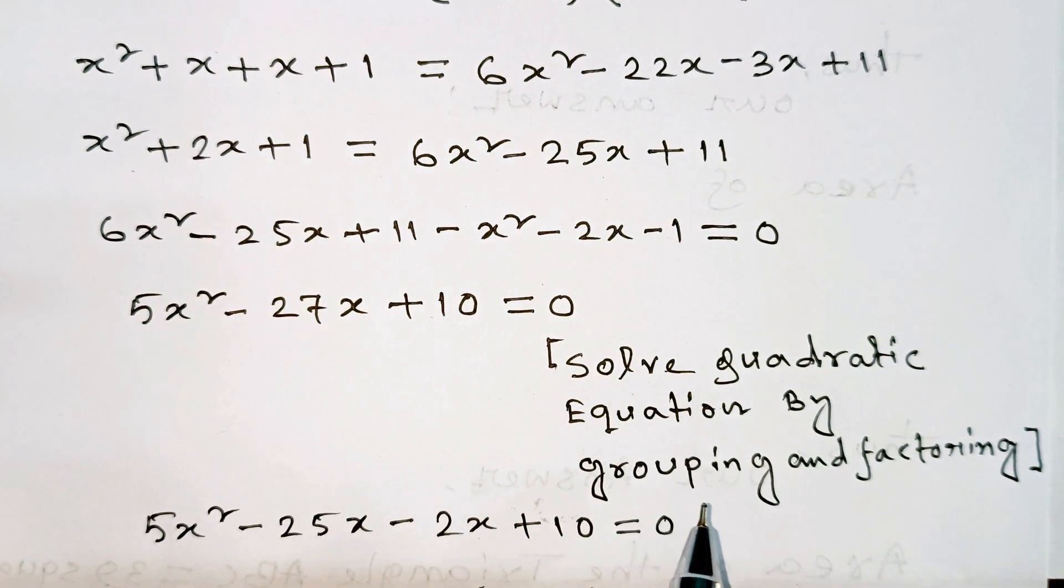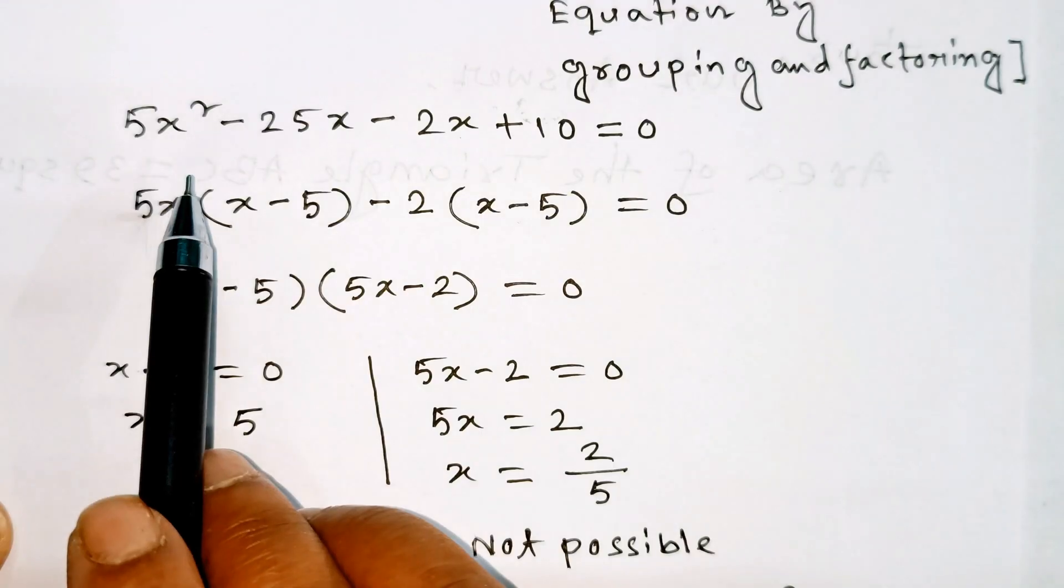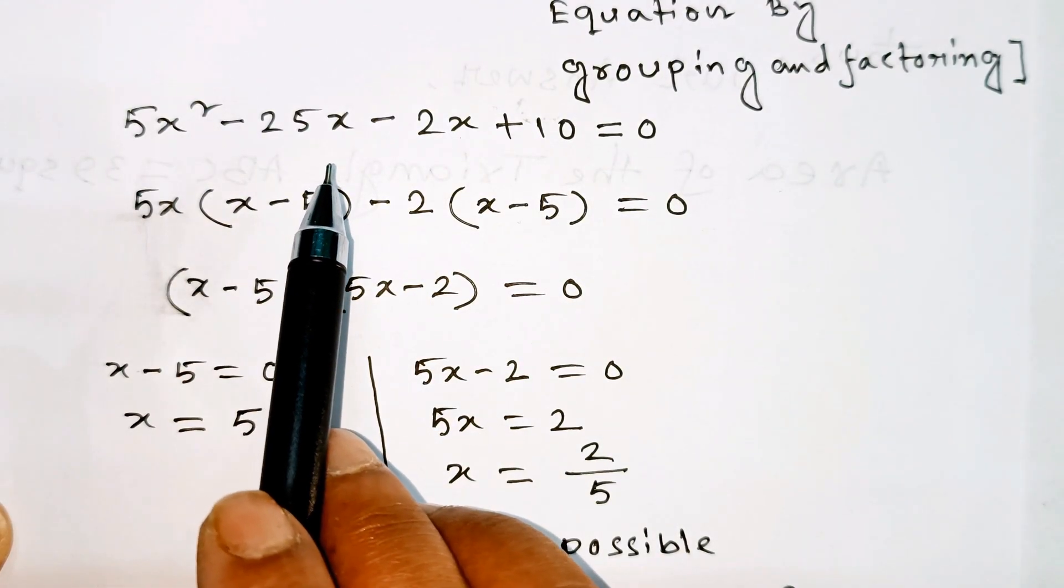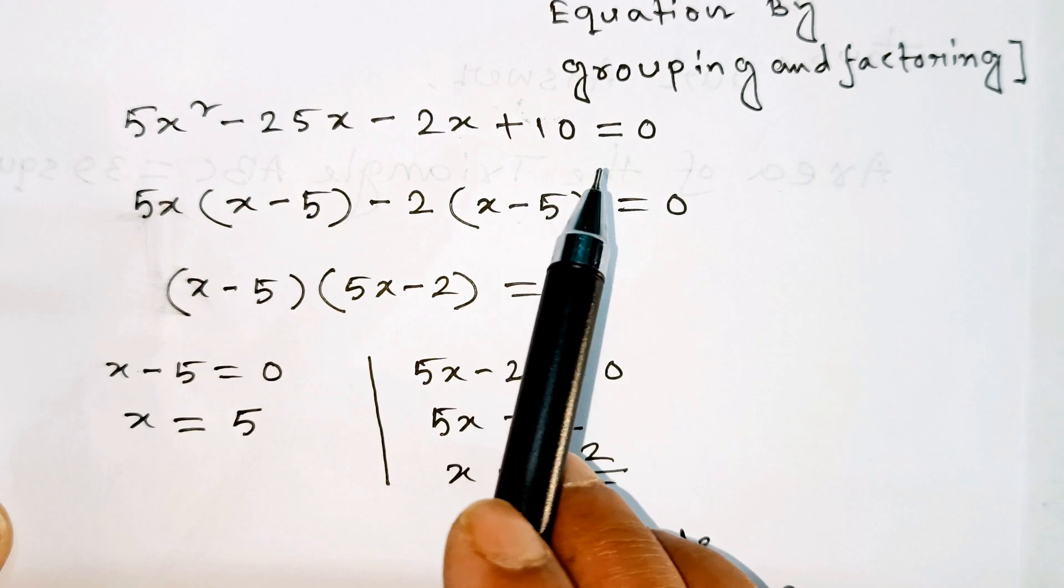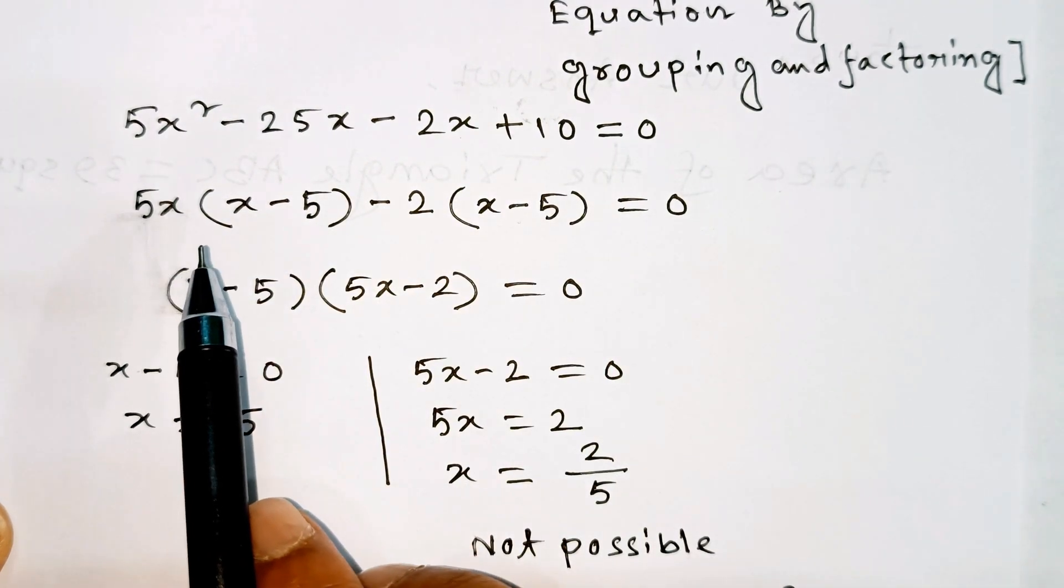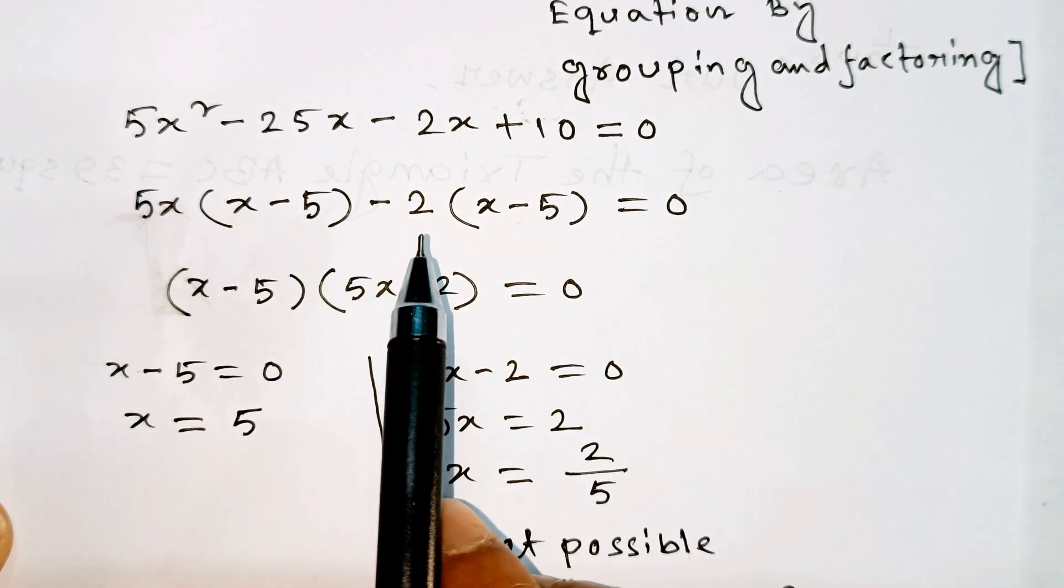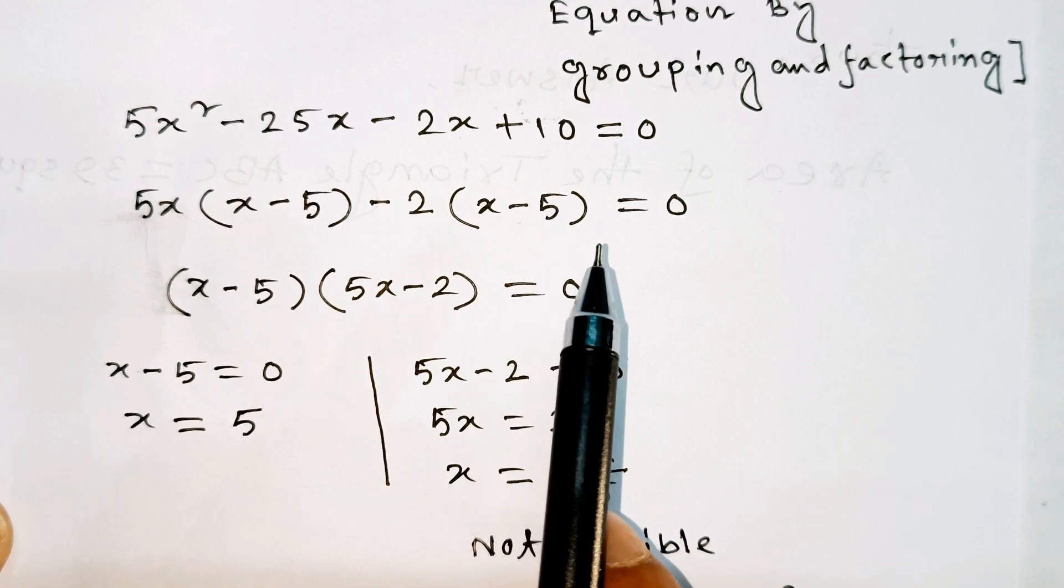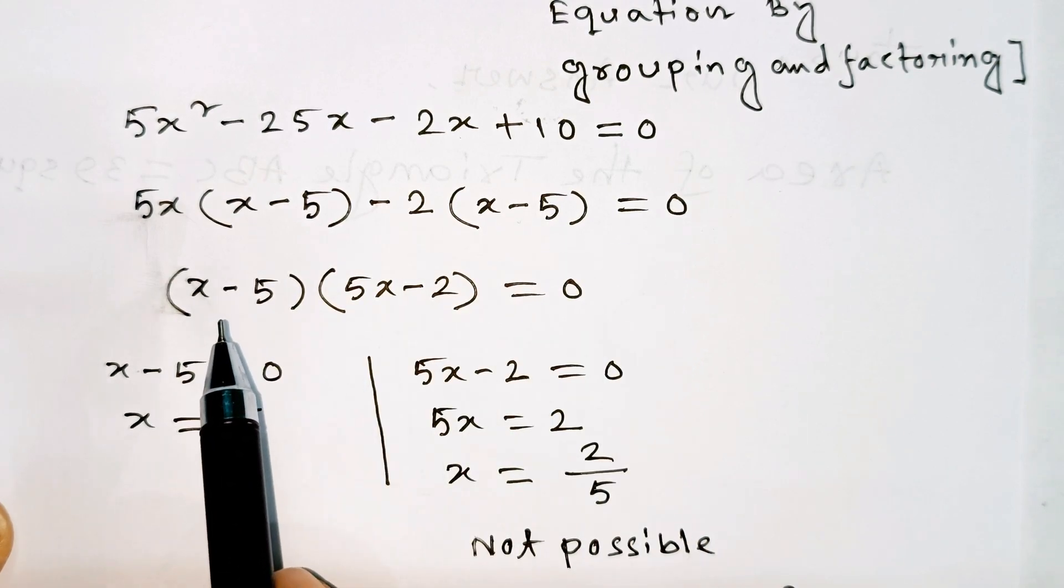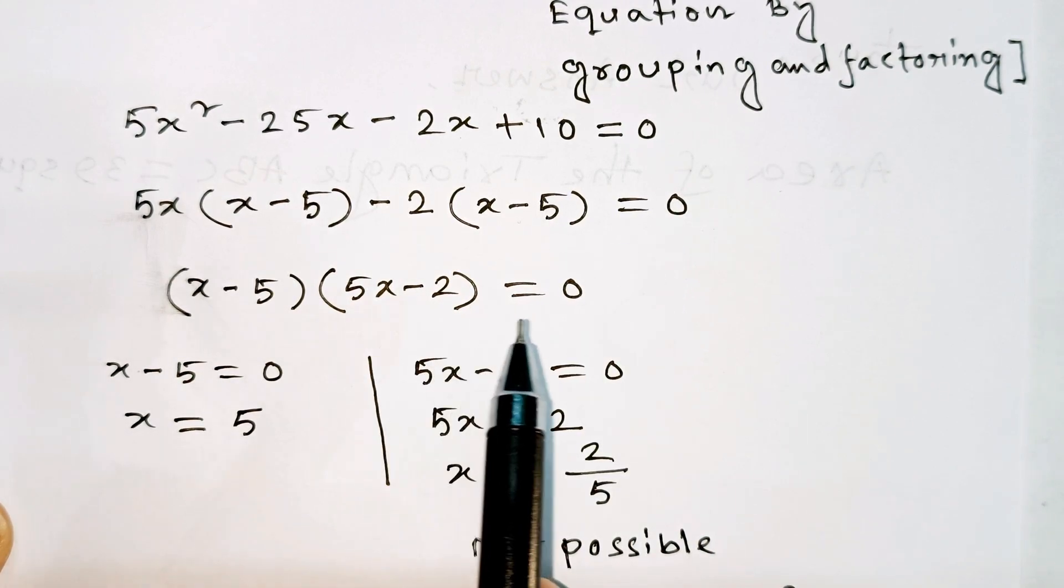Solve the quadratic equation by grouping and factoring: 5x squared minus 25x minus 2x plus 10 equals 0. Factoring gives 5x times (x minus 5) minus 2 times (x minus 5) equals 0, so (x minus 5)(5x minus 2) equals 0.